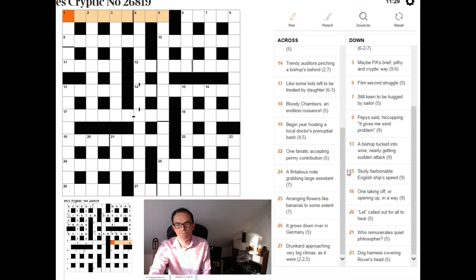Let's take a look at 27 across now, where we have drunkard approaching very big climax as it were. So here one of the bits of crosswordese I think will help. Drunkard very often is SOT and that's simply because those three letters are so useful together that setters like to use them often. So knowing that when I saw this clue I immediately disregarded drunkard as possibly being the definition. I was looking at the other end of the clue and I could see the clue could be climax as it were or simply as it were. And as it were, with the SOT at the start, that felt right.